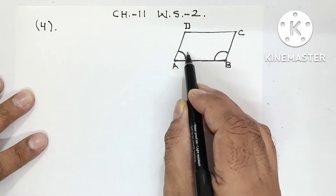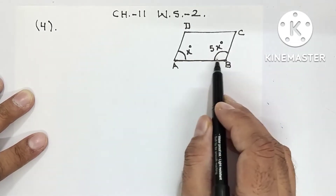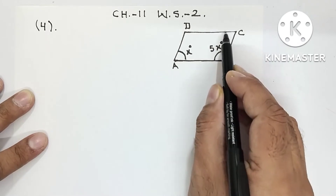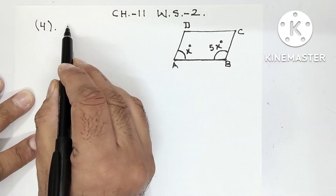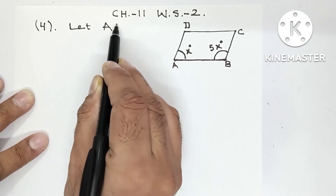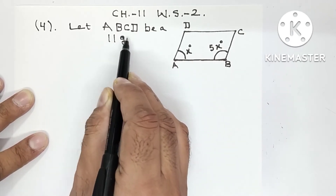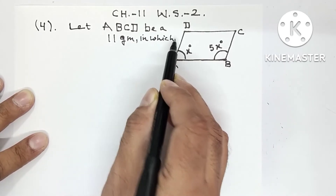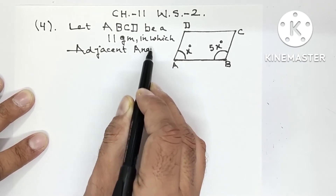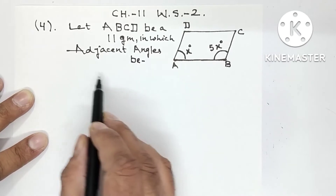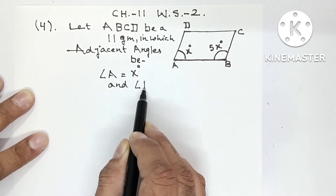Since the two adjacent angles are in ratio 1:5, I will assume the first angle as X degrees and the second as 5X degrees. So assume angle A = X degrees and angle B = 5X degrees for parallelogram ABCD.